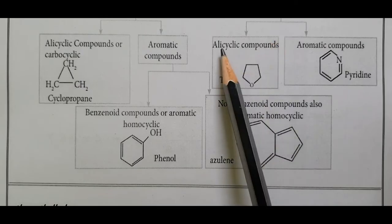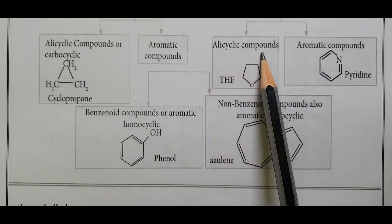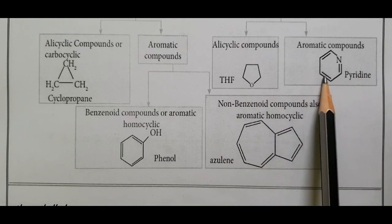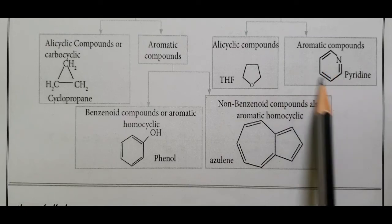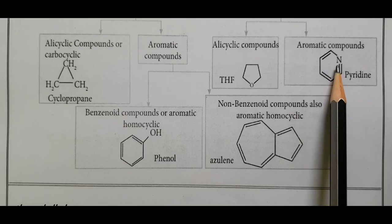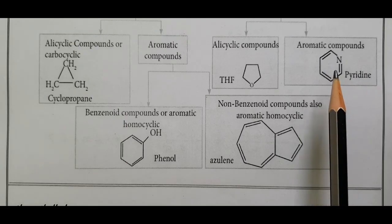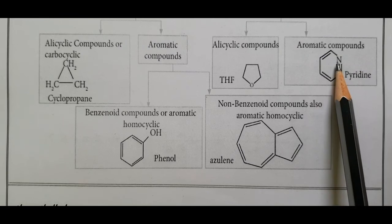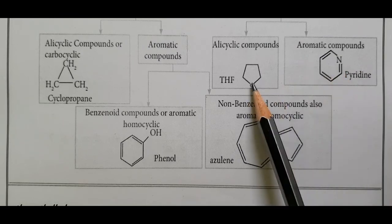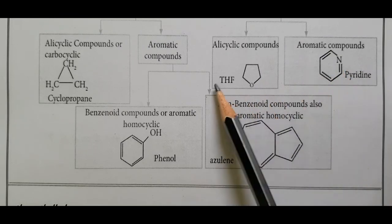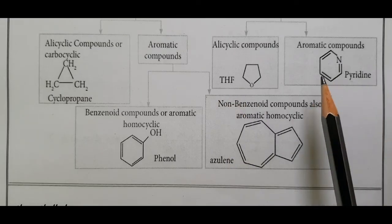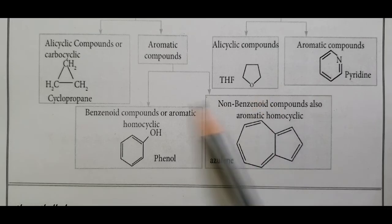Homocyclic compounds are further classified into alicyclic and aromatic compounds. Aromatic compounds have alternating single and double bonds with delocalization of pi electrons, satisfying the 4n+2 rule where n is an integer. Heteroatoms such as nitrogen and oxygen are present in heterocyclic compounds — for example, tetrahydrofuran and pyridine. These are the classifications of organic compounds based on structure.